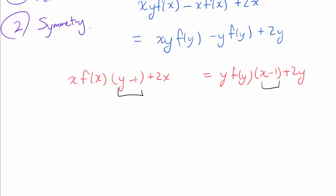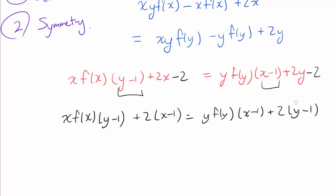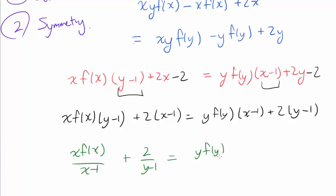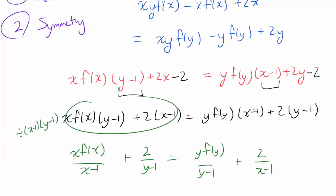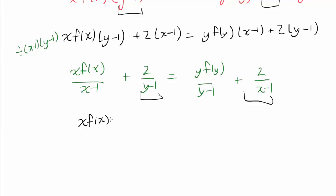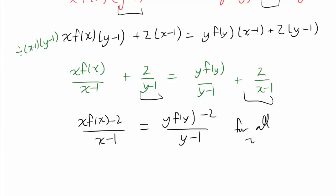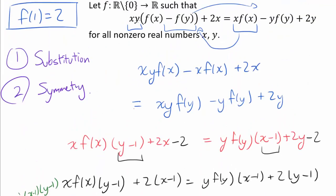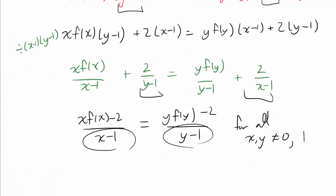By subtracting 2 from both sides we create factors of (x − 1) and (y − 1) on each side. Dividing by (x − 1)(y − 1) yields: x·f(x)/(x−1) + 2/(x−1) = y·f(y)/(y−1) + 2/(y−1) for all x, y not equal to 0 or 1.